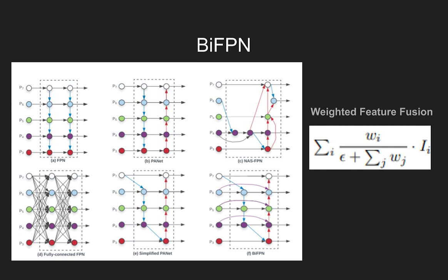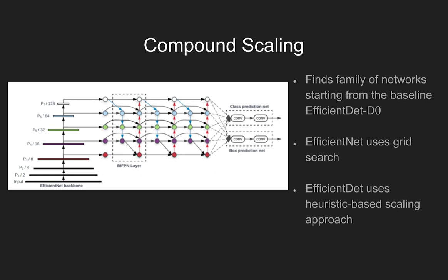Specifically, fast normalized fusion shown in the equation is used. The positiveness of each W is ensured by applying ReLU, and epsilon is added to avoid numerical instability. The aim of compound scaling of the network is to scale up a baseline model, EfficientDet D0, to cover a wide spectrum of resource constraints. A simple compound coefficient jointly scales up all dimensions of the backbone network, class box network, and resolution.